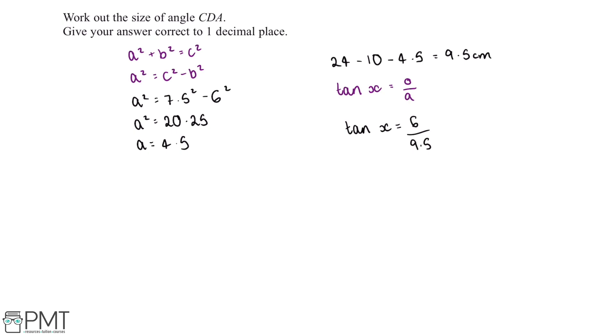And what this means is that x is equal to tan to the negative 1 multiplied by 6 over 9.5. And if we put this into our calculator this tells us that x is equal to 32.2756 and so on.